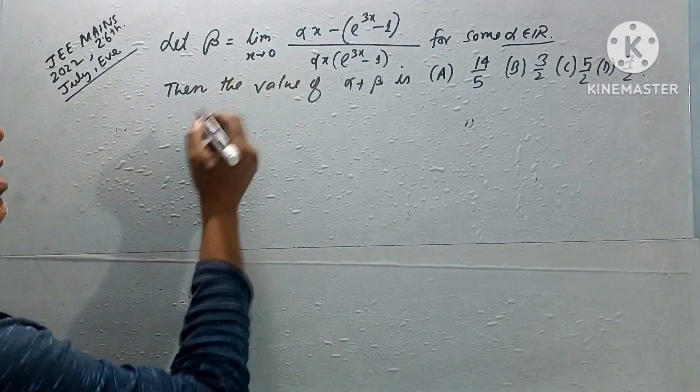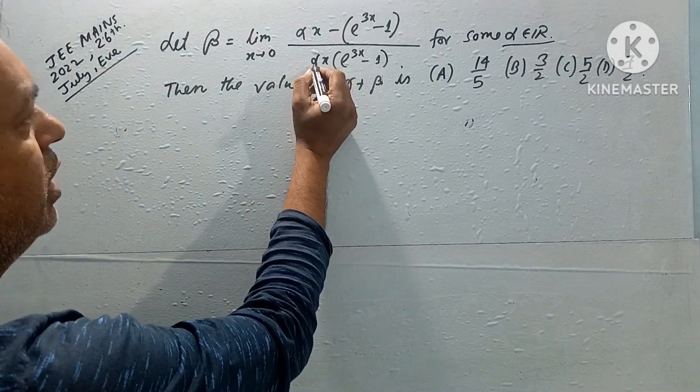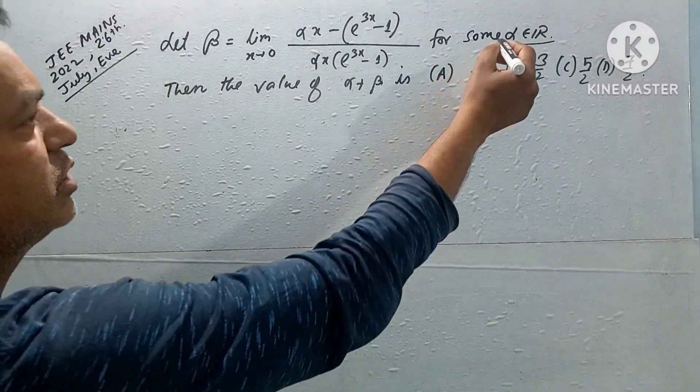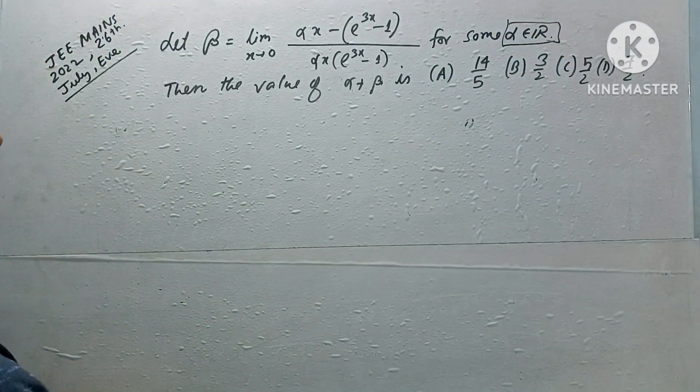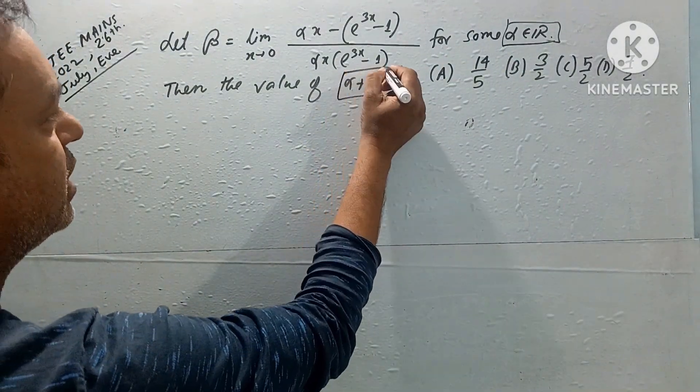Beta equals limit x tending to 0 of alpha x minus e power 3x minus 1, divided by alpha x into e power 3x minus 1. For some alpha in R, alpha is a fixed number. Then we need to find the value of alpha plus beta.